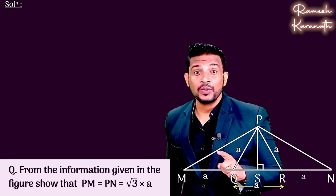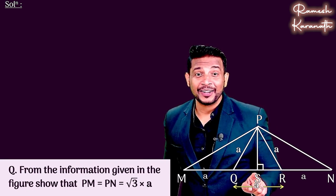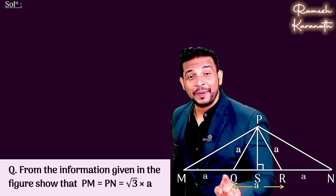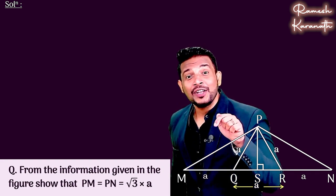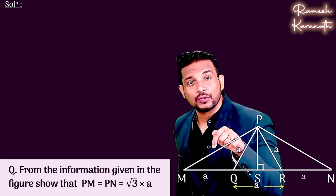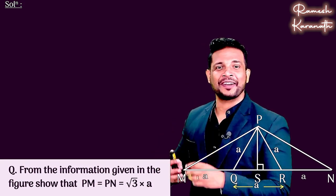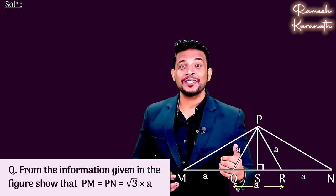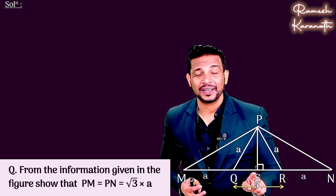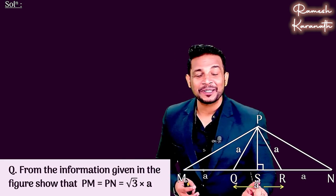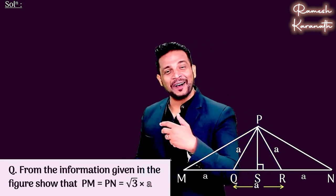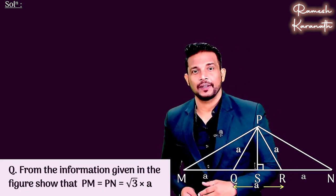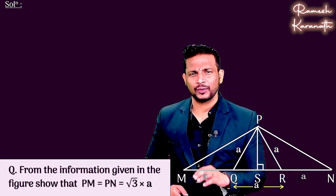We have PM in a right triangle. We can see a triangle which is right angled, and that side is the hypotenuse. Then we can apply the Pythagorean theorem. But for this, we need two sides. Do we have PS? Do we have MS? So how can we do it? Let's see.